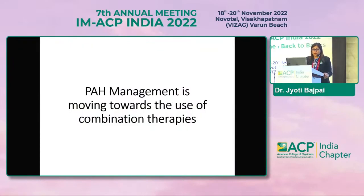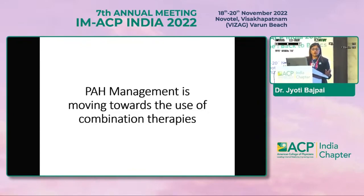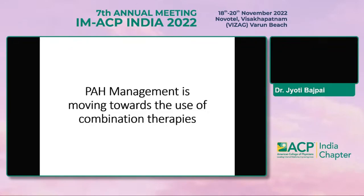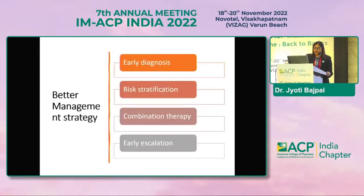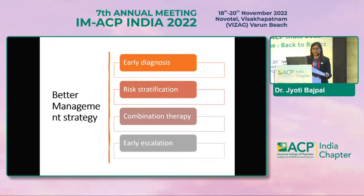PH management is moving toward the use of combination therapy, similar to COPD, asthma, and hypertension management where combination therapy is standard. Better management starts with early diagnosis, then risk stratification, then starting combination therapy. When a patient does not respond to combination therapy, escalation is considered. There is also an option for triple or quadruple combination therapy.